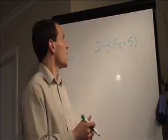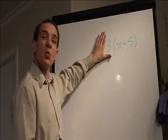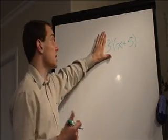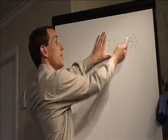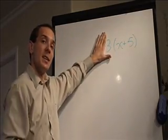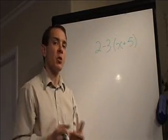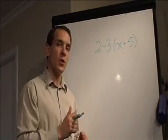A lot of what you'll see for distributing is going to be just something like that, where it's just one number in front of the parentheses. And for that, it's a pretty simple one. All you do is you take the 3 and you multiply it times everything inside the parentheses. Now that's probably something you didn't have too much trouble picking up, so I'm going to take it a step further.